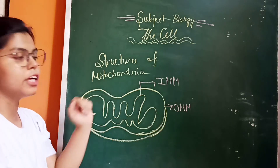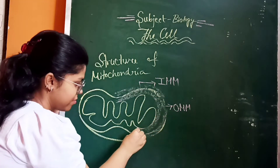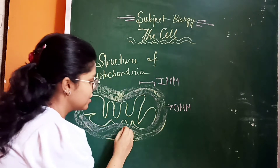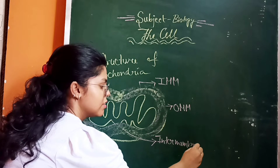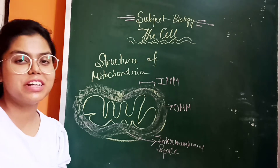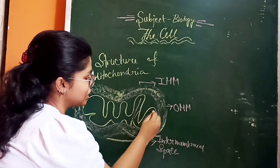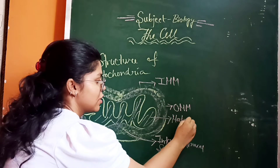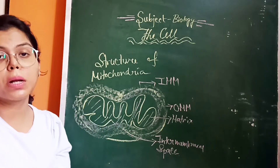There are two compartments. One is between the outer mitochondrial membrane and the inner mitochondrial membrane, which is the intermembrane space. The other compartment is the mitochondrial matrix, which is present inside the inner mitochondrial membrane.